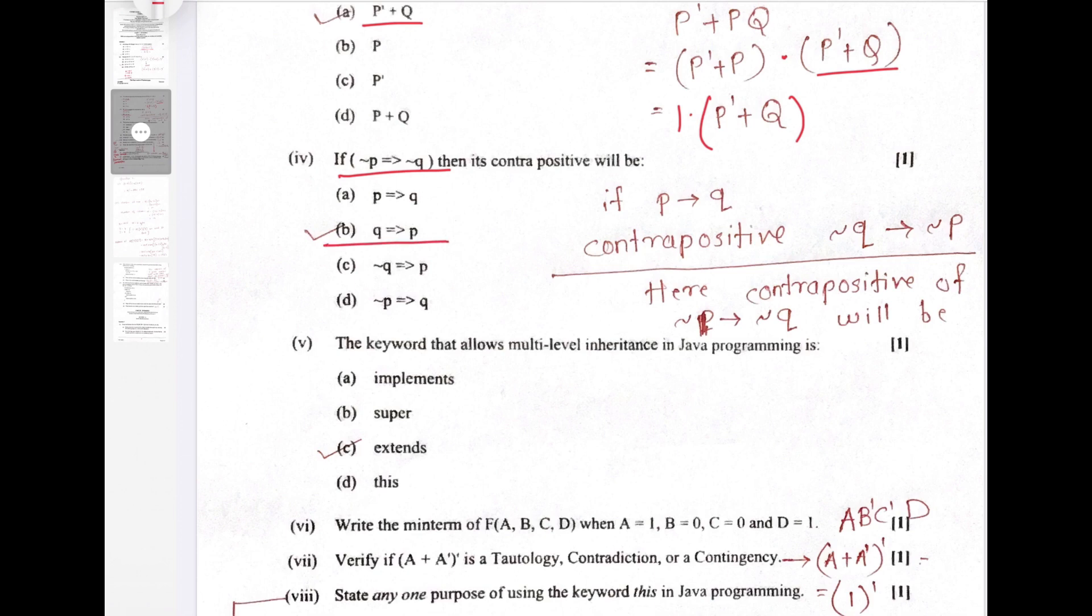The keyword that allows multi-level inheritance in Java programming is what? Of course, extends. Extends allows us to do multi-level inheritance.